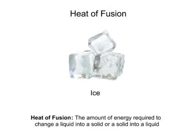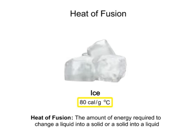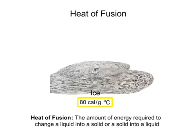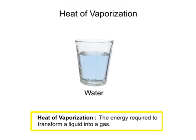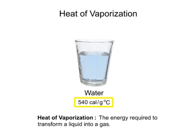The amount of heat required to change 1 gram of ice to water is 80 calories. Similarly, the heat of vaporization is the energy required to transform a liquid into a gas. It requires 540 calories to change 1 gram of liquid water into a gas.